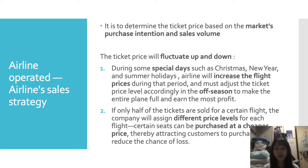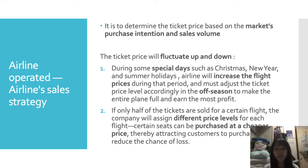Let me give you an example. During some special days such as Christmas, New Year, and summer holidays, the airline will increase flight prices during those periods, and must adjust the ticket price accordingly in the off-season to make the entire plane full and earn the most profit. If only half the tickets are sold for a certain flight, the company will assign different price levels — for example, certain seats can be purchased at a cheaper price, thereby attracting customers to purchase and reducing the chance of loss.